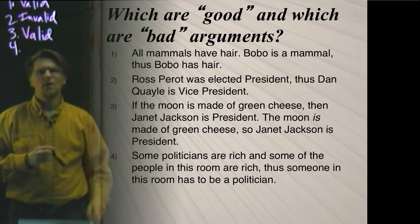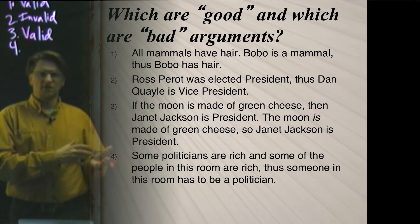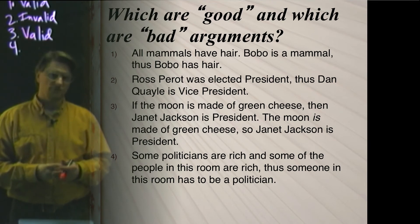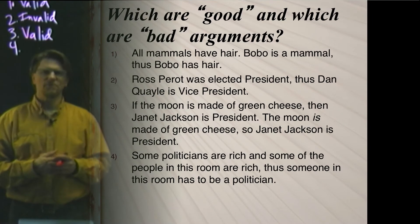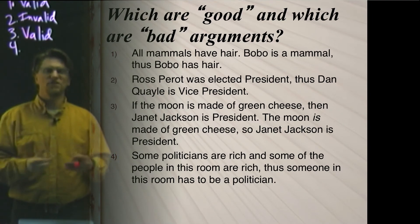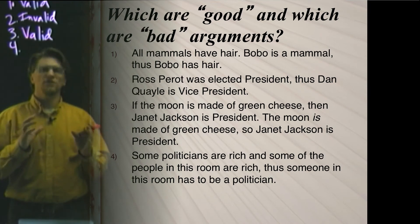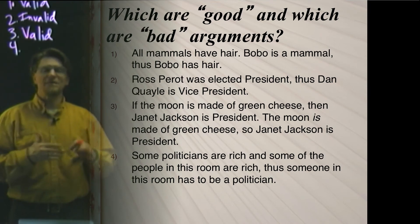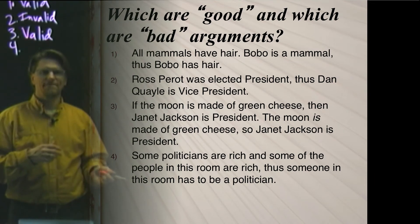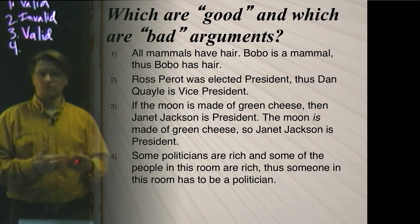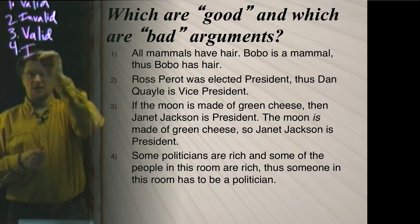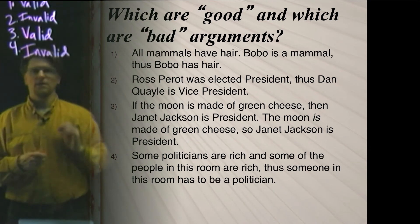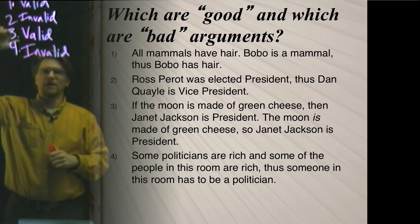For the last argument — some politicians are rich, some people in this room are rich, thus someone in this room has to be a politician — we assume it's a deductive argument, close again to a categorical syllogism. If both premises were true, would it be guaranteed that someone in this room is a politician? No — it would be possible, but not guaranteed. Since the conclusion is not guaranteed by the premises even when assumed true, this argument is invalid. So our results are: valid, invalid, valid, and invalid.